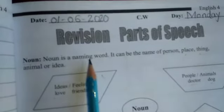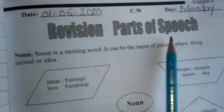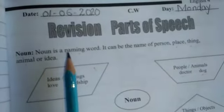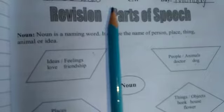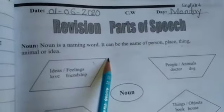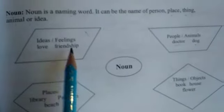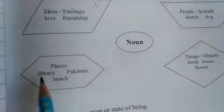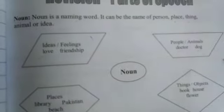Number one: Noun is a naming word. It can be the name of a person, or it can be the name of anything. Like 'this is a pencil' — pencil is a noun; 'this is a book' — book is also a noun. More examples of a noun include ideas and feelings like love and friendship. In people: doctor is a noun. Animals: dog is a noun. Places: library, beach, Pakistan. Things: book, objects, house, floor. These are all examples of a noun.